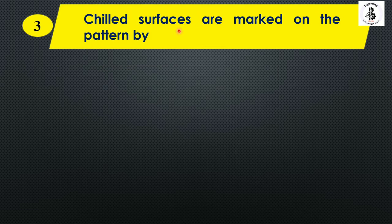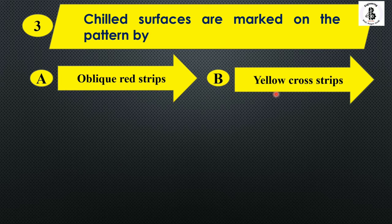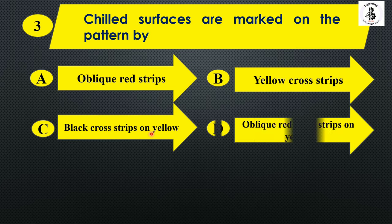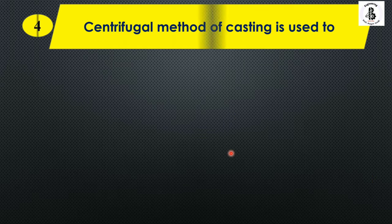Shield surfaces are marked on the pattern by: Option A: oblique rate strip, Option B: yellow cross strip, Option C: black cross strip on yellow, and Option D: oblique rate cross strips on yellow. The shield surfaces are marked onto the pattern by oblique rate cross strips onto the yellow. So the right answer is Option D.